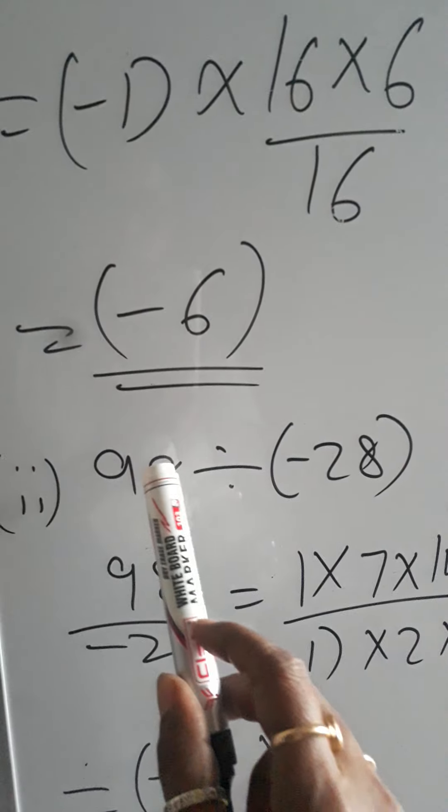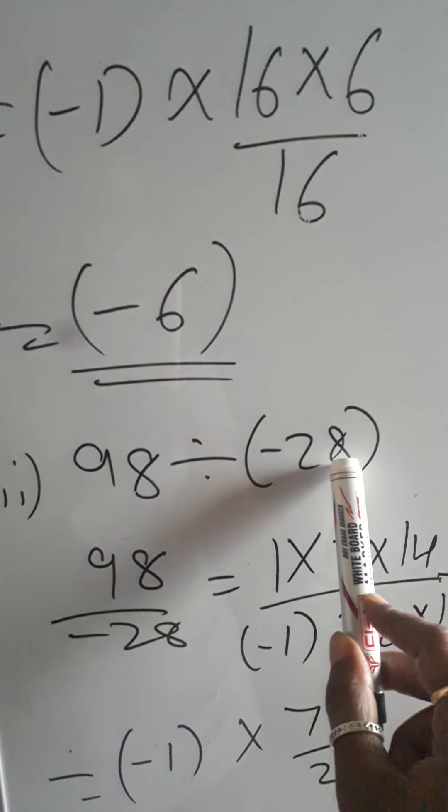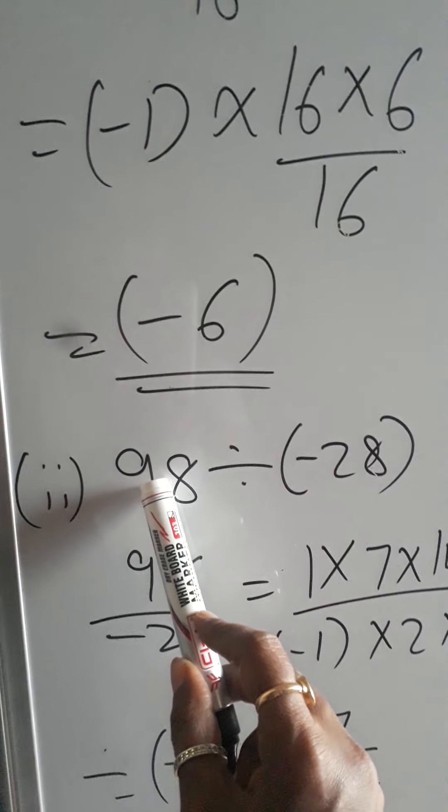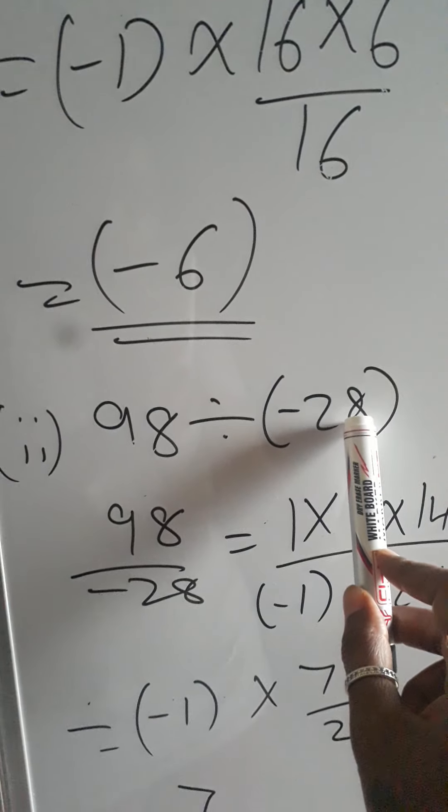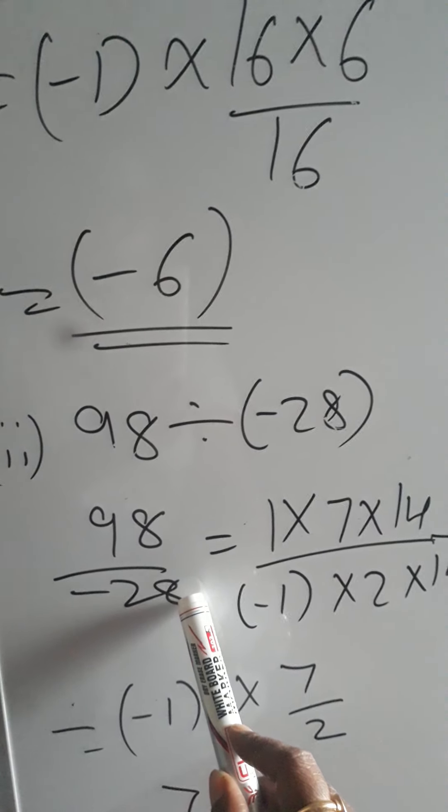Second one, 98 divided by minus 28, positive integer divided by negative integer. So 98 divided by minus 28.